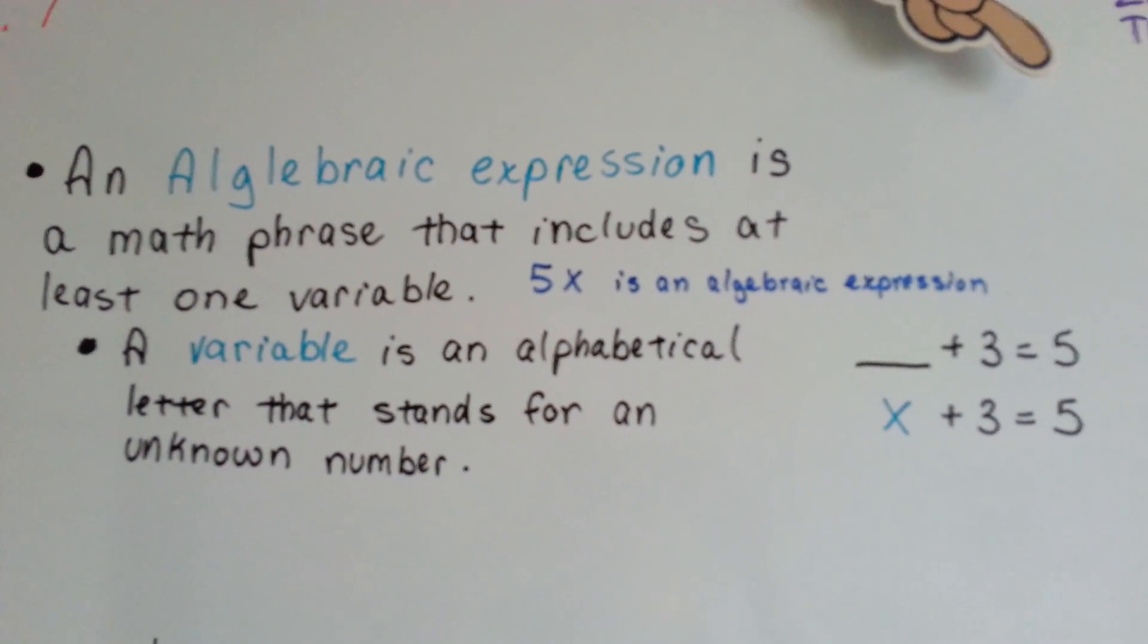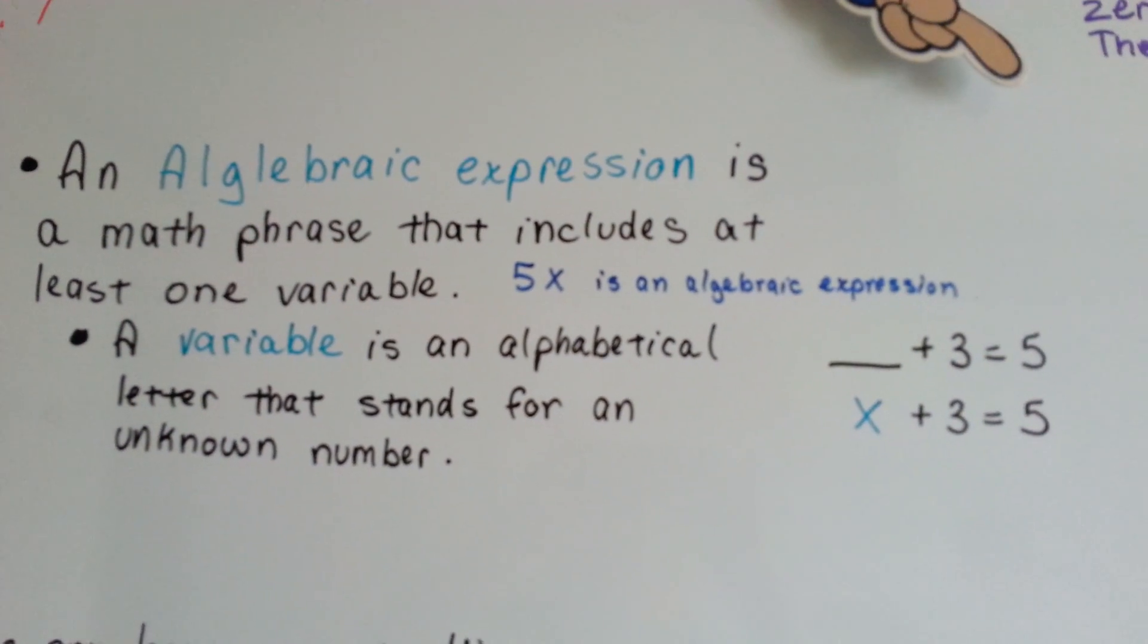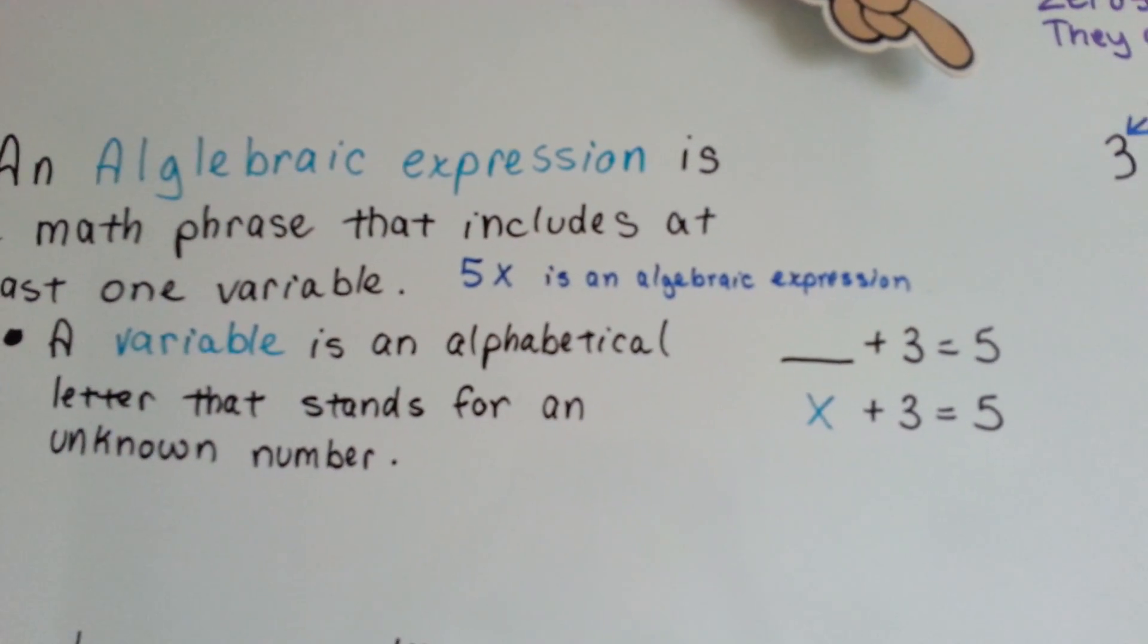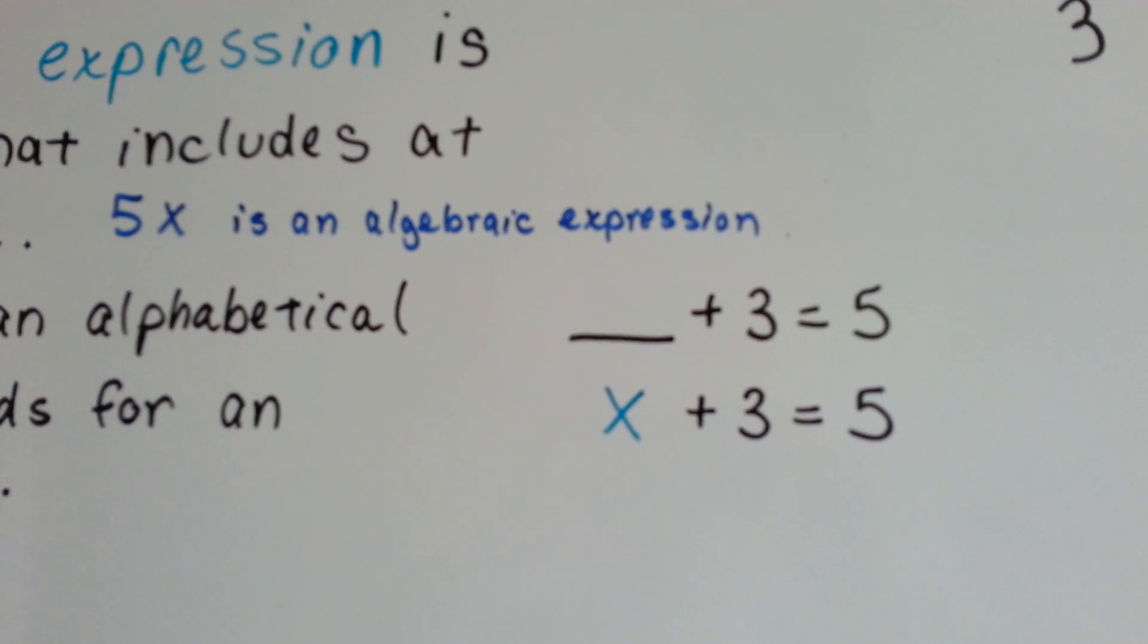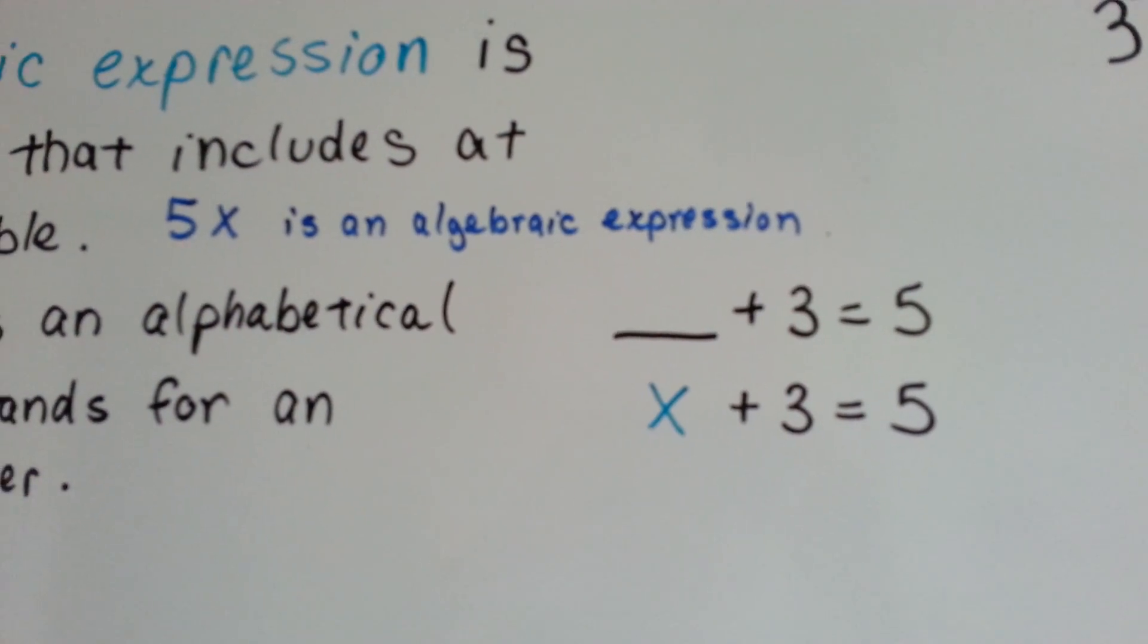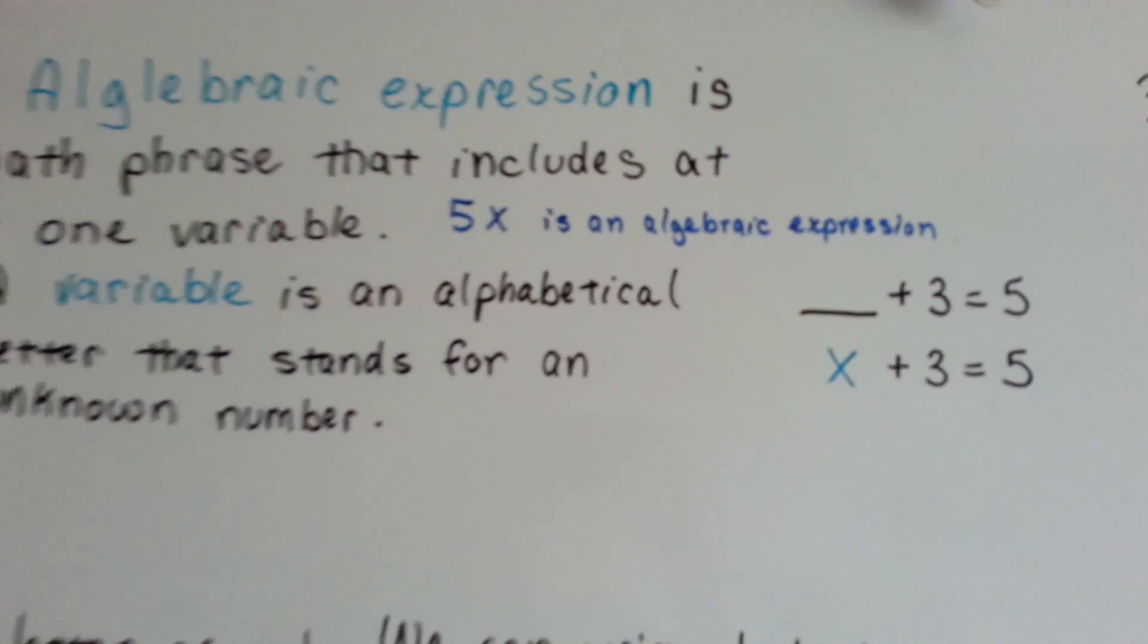A variable is an alphabetical letter that stands for an unknown number. Instead of writing blank plus 3 equals 5, we write x plus 3 equals 5, and x is our variable.